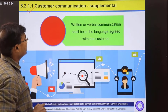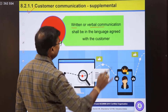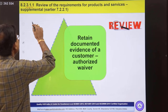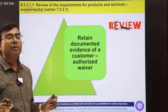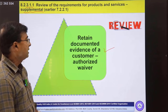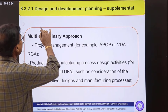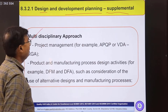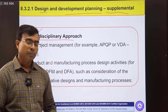8.7 covers management of non-conformities. Sub-clause 8.2.1.1 is an exclusive IATF requirement for establishing a customer communication system for all written and verbal communication. 8.2.3.1.1 requires retaining documented evidence of customer-authorized waivers — any deviation received from the customer should be documented. 8.3.2.1 is a supplemental IATF requirement asking you to use a cross-functional or multi-disciplinary team approach in design and development planning.